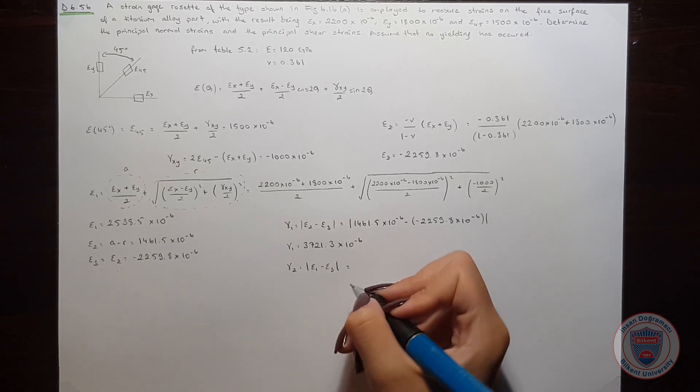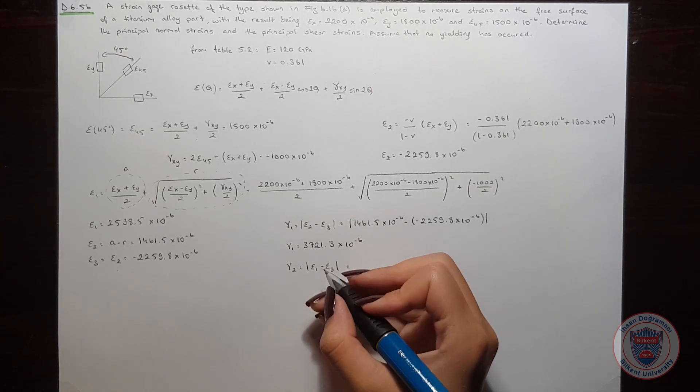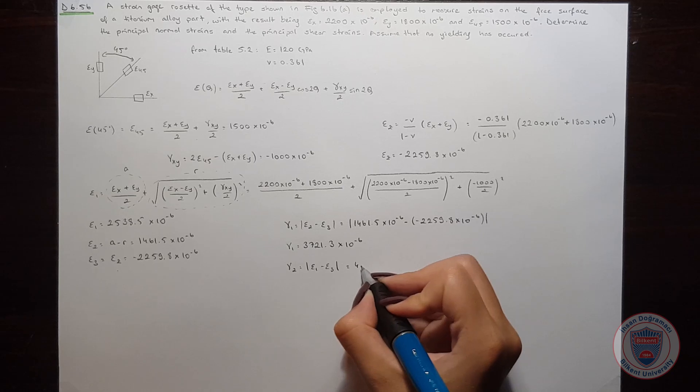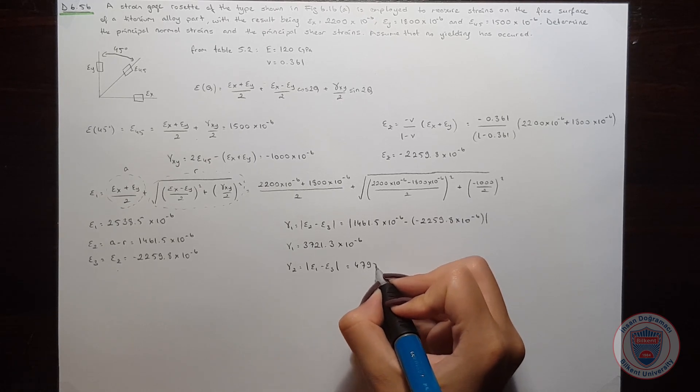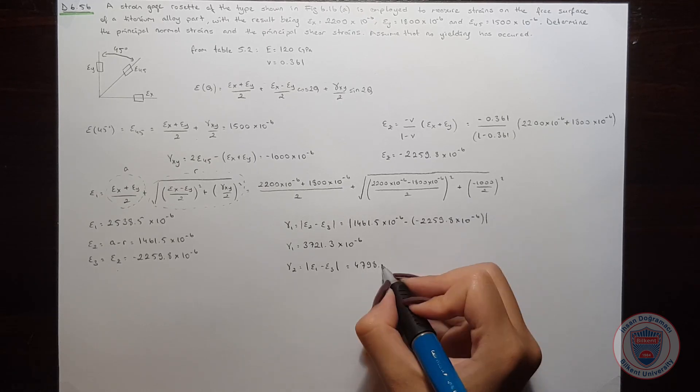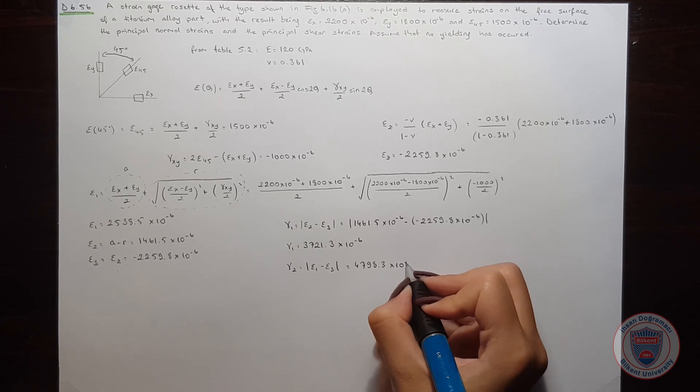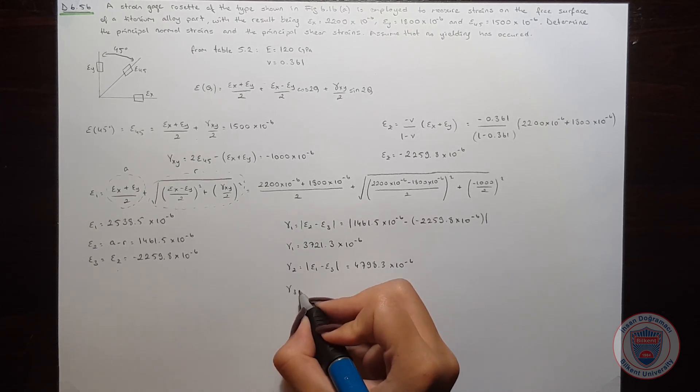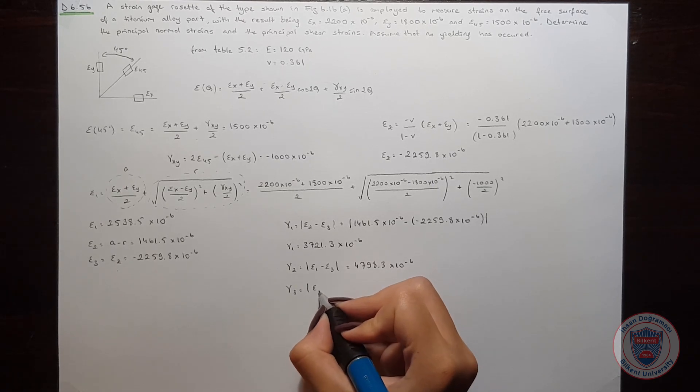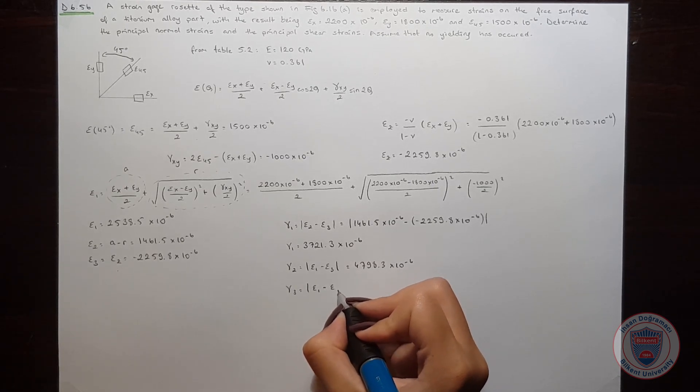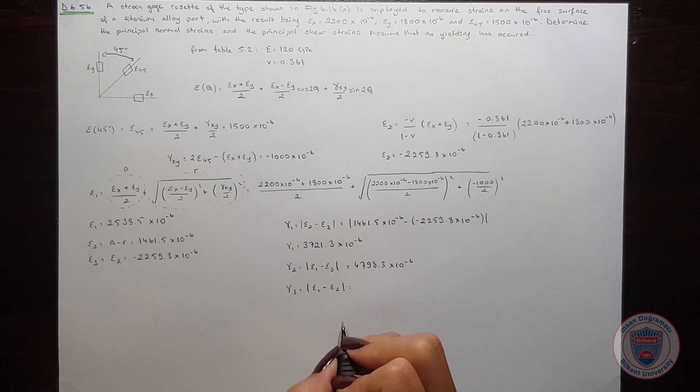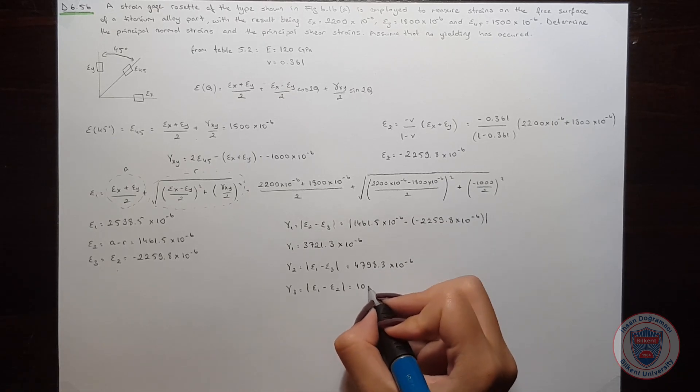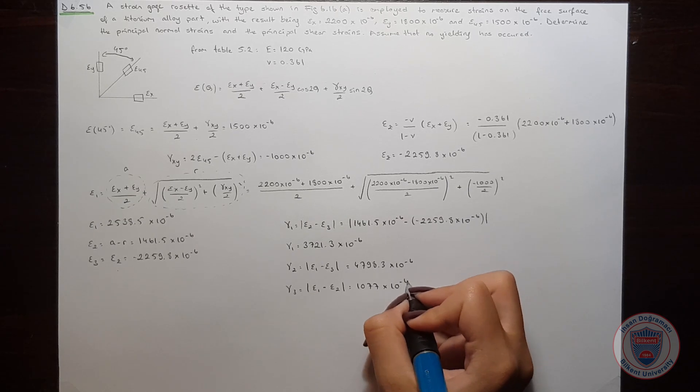And it is equal to 4798.3 times 10 to the power of minus 6. And finally, γ3 will be equal to ε1 minus ε2 and it is 1077 times 10 to the power of minus 6.